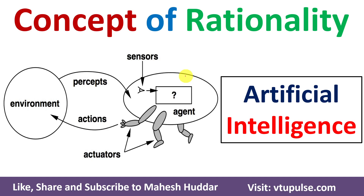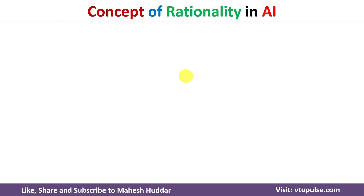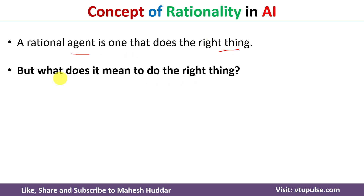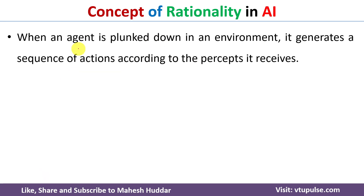Welcome back. In this video I will discuss the concept of rationality in artificial intelligence with the help of a simple example. The first question is: what is a rational agent? An agent is said to be rational if it does the right thing. Another question is: what does it mean to do the right thing? So there should be a criteria to say that the agent is doing the right thing or the wrong thing — that criteria we need to decide.